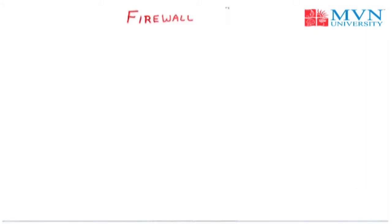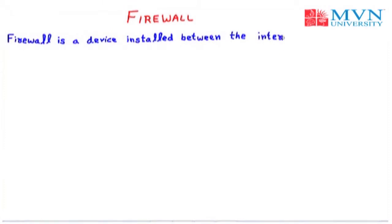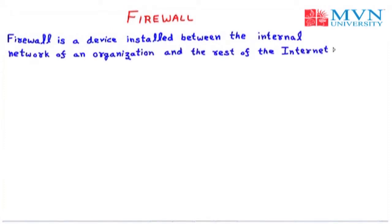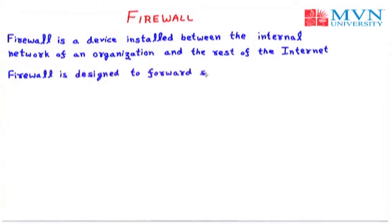Hello friends, today we will discuss the next topic, that is firewall. The firewall is a device installed between the internal network of an organization and the rest of the internet. All previous security measures cannot prevent you from sending a harmful message to a system, so the firewall is designed to forward some packets and filter others.